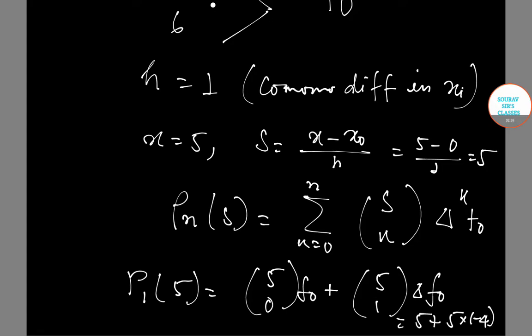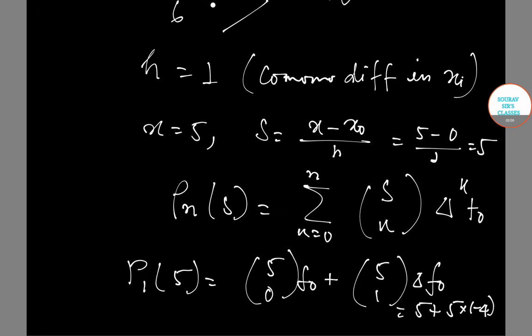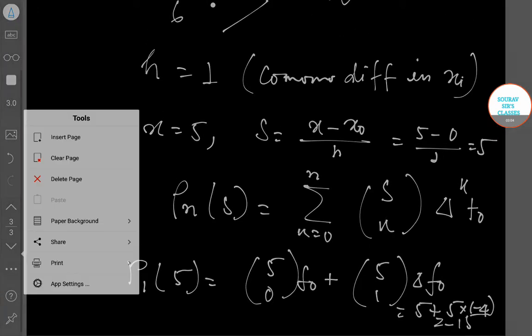Now we can say that P_2(5) equals P_1(5) plus 5C2 times delta square f_0.